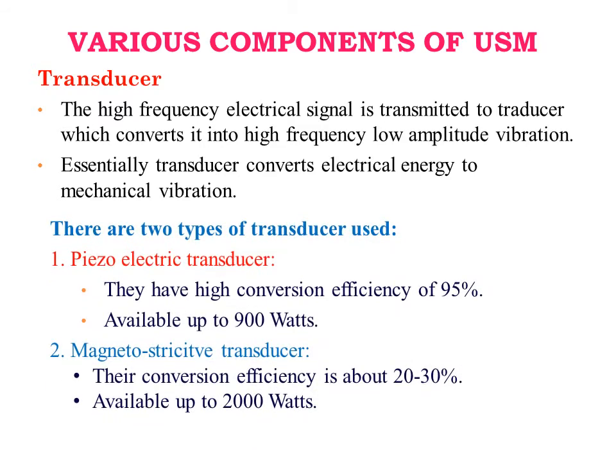There are two types of transducers used. The first is the piezoelectric transducer, which has a high conversion efficiency of 95% and is available up to 900 watts. The second is the magnetostrictive transducer, which has a conversion efficiency of about 20 to 30% and is available up to 2000 watts.